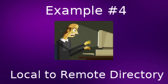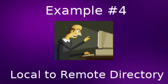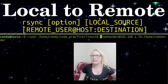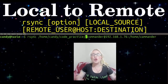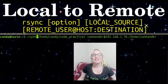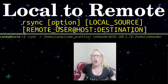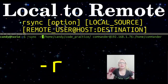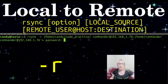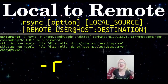Example number four, we're going to transfer an entire directory local to remote using the dash r option. Instead of just copying over Linux10.txt, we are going to copy over the entire code practice directory. In order to do that, we're going to have to use a recursive option. Dash r is a common Linux argument used to do commands recursively — that means it's not only going to affect that specific directory, but also all the files and subdirectories within it.